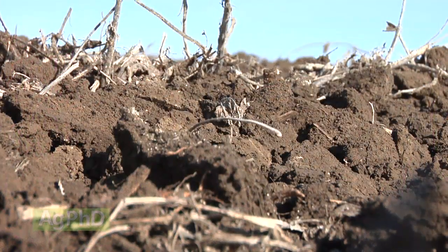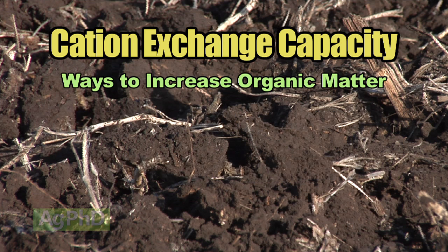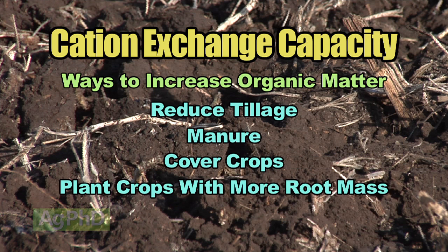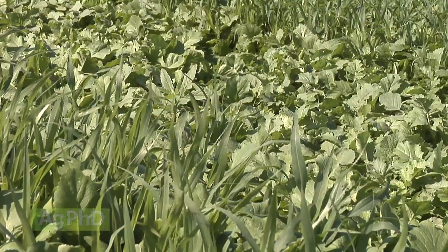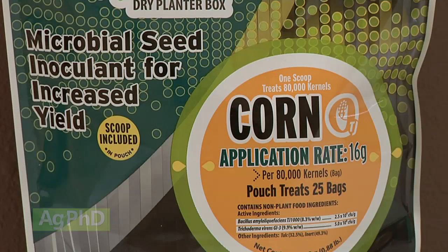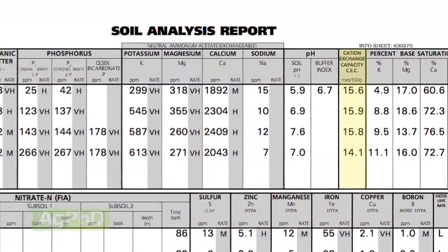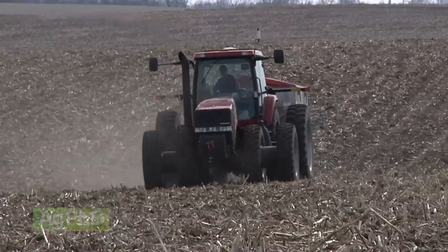Cation exchange capacity is a measure of a few things, one of them being the amount of organic matter in the soil — and that's the one farmers can actually influence. Farmers can reduce tillage, use manure, use cover crops, plant crops with lots of root mass, and use microbial products that help influence root growth. All those things can help build cation exchange capacity slowly over time. For the most part, CEC doesn't change a lot from year to year, so farmers like to know their CEC values for their various soils to better manage them and do a good job with the environment.